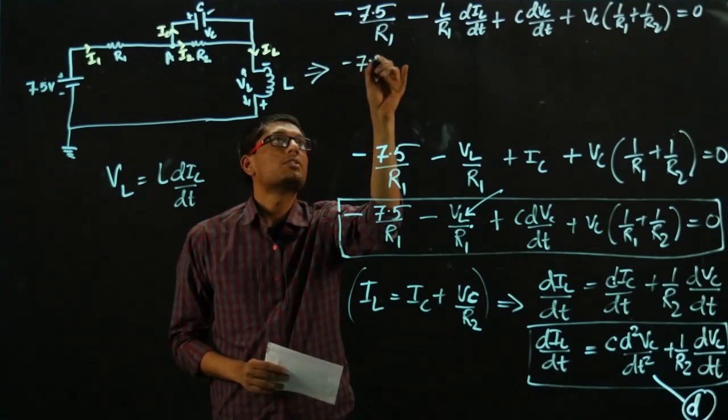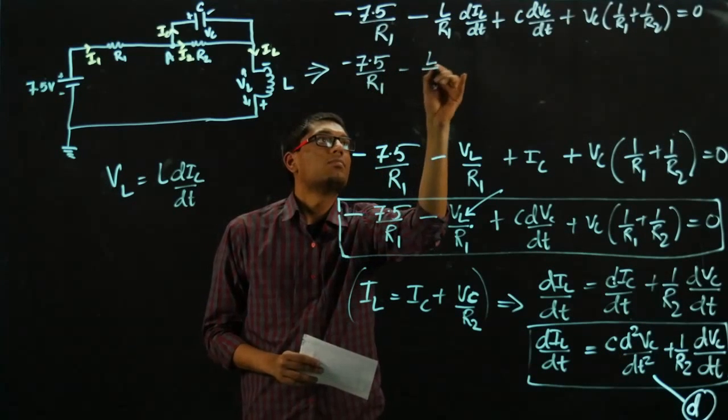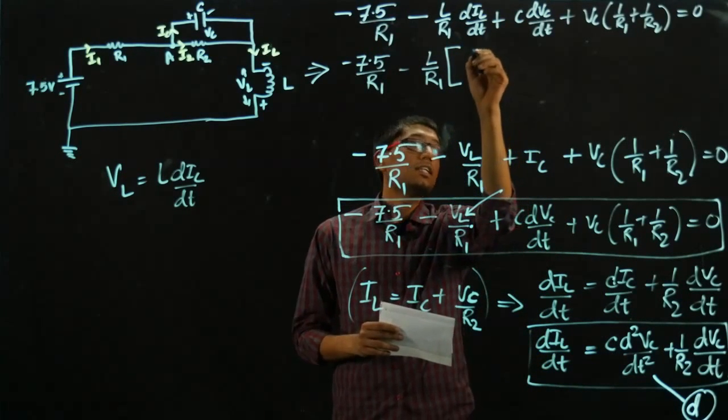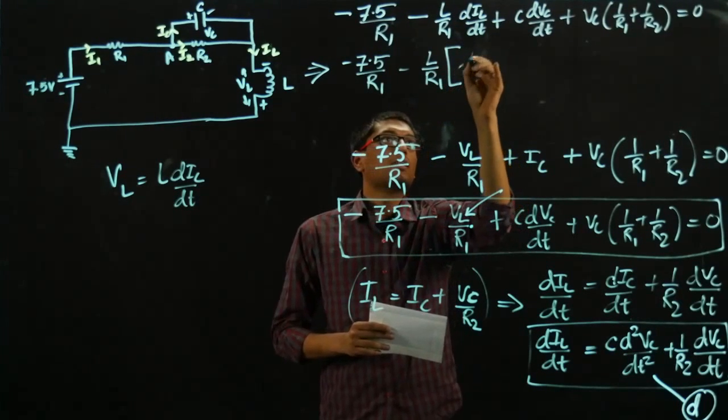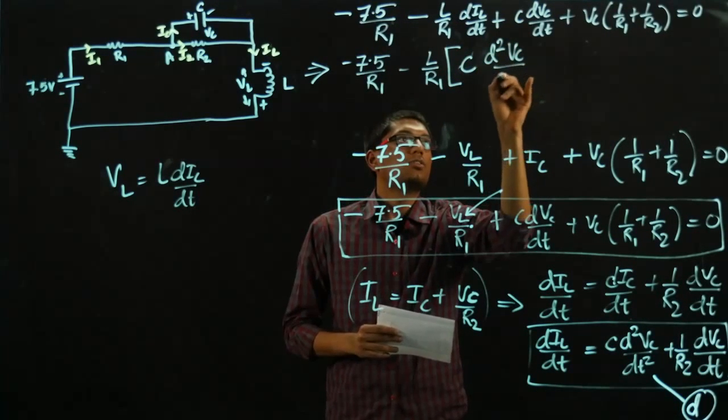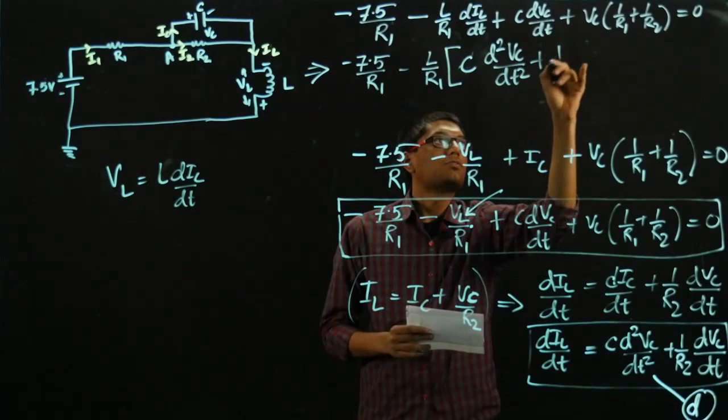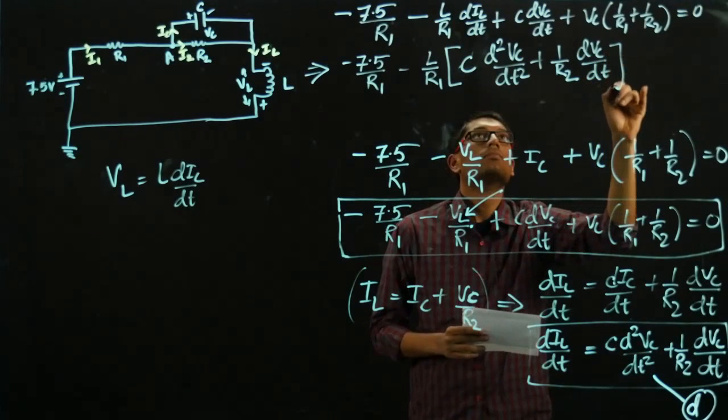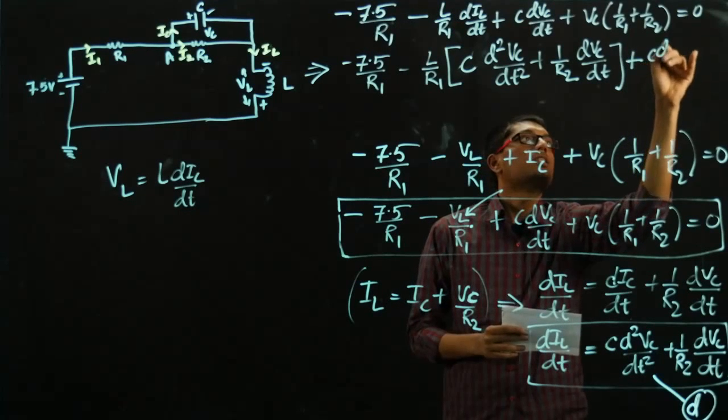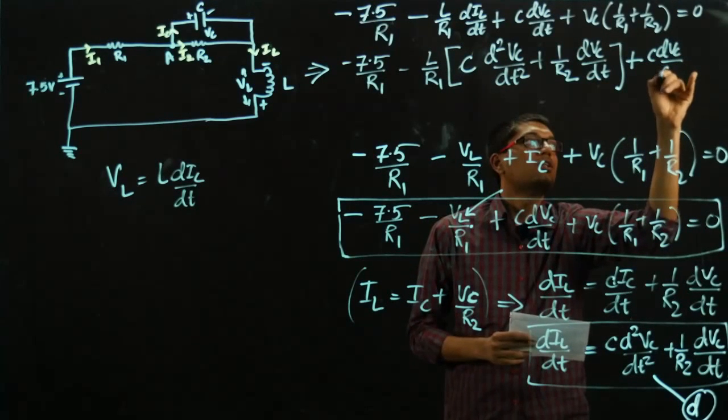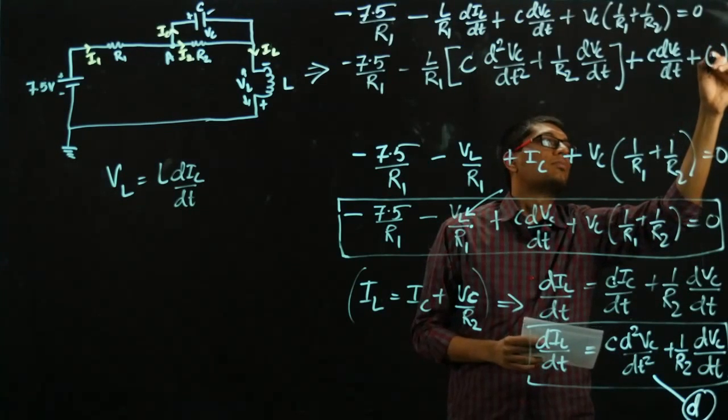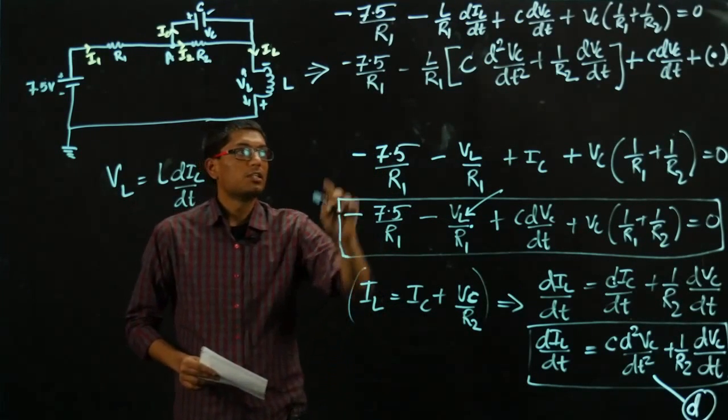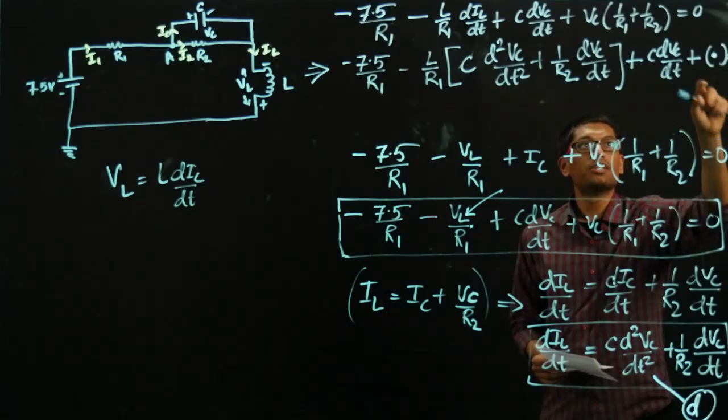So this becomes minus LC over R1 d squared VC over dt squared plus L over R1R2 dVC/dt plus C dVC/dt plus VC times 1 over R1 plus 1 over R2 minus 7.5 over R1 equals 0. Now realize that in this whole expression the only variable is VC. And that's the differential equation you needed.